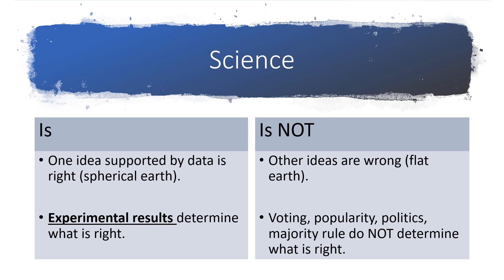Things like the most popular idea, a vote, politics, or an authority figure saying something is correct — that's not science. Those things do not determine what is right and wrong in science. Experimental data determines what is right and wrong.